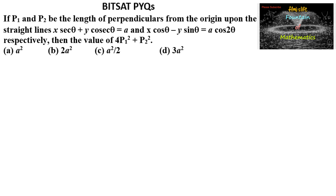Given p1 and p2 are the lengths of the perpendiculars from the origin upon the straight lines x·secθ + y·cscθ = a, and x·cosθ - y·sinθ = a·cos2θ. We need to find the value of 4p1² + p2².